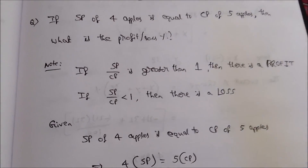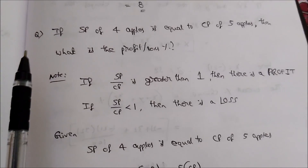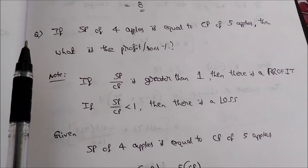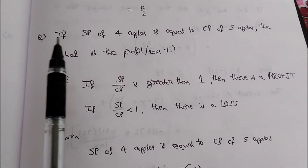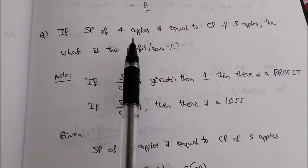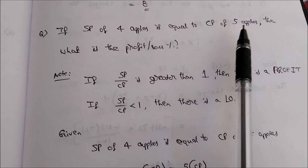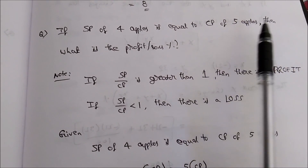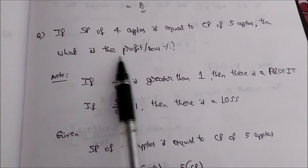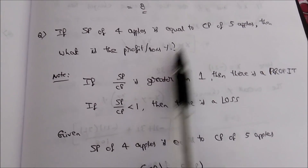Hi friends, today I have taken a problem from the topic profit and loss. The question is: if selling price of 4 apiece is equal to cost price of 5 apiece, then what is the profit or loss percent?